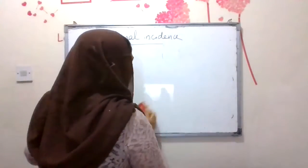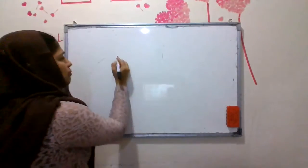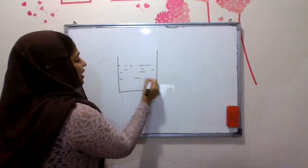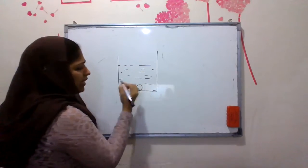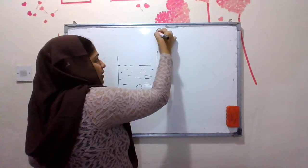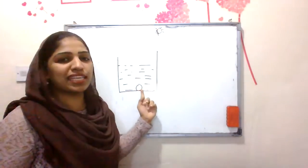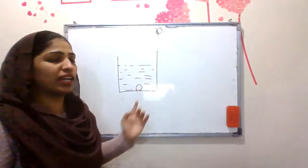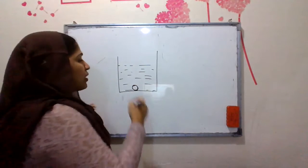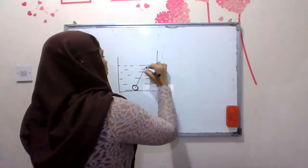Now let's take the derivation of real depth and apparent depth. You will not be able to see the actual position of an object in a medium. For example, this is the position of the object, O. How do we see objects? Light from the object must fall on our eyes.